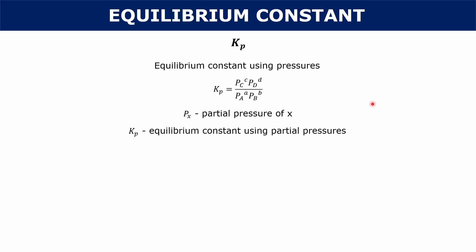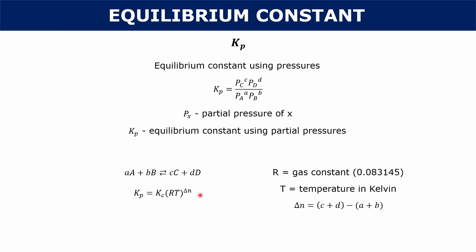Kp and Kc give you different numbers for the constant, but they do have a relationship: Kp is equal to Kc times RT to the delta n, where delta n is the coefficients of your products minus the coefficients of your reactants, R is your gas constant, and T is your absolute temperature in Kelvin. This is just a way of relating Kp to Kc. If you're wondering where this equation is derived from, there's a video linked in the description — it is completely intuitive and doesn't just come from nowhere.